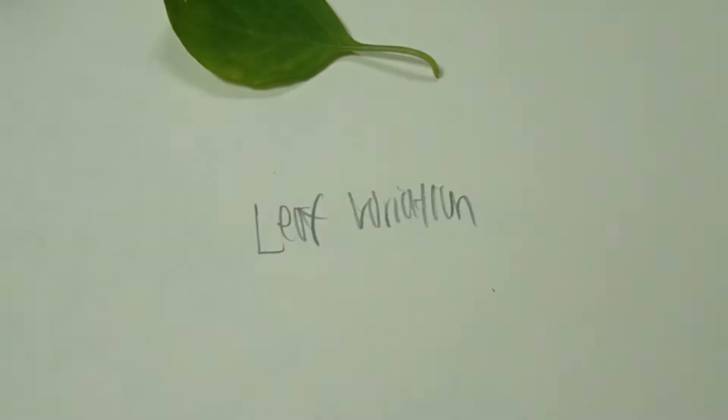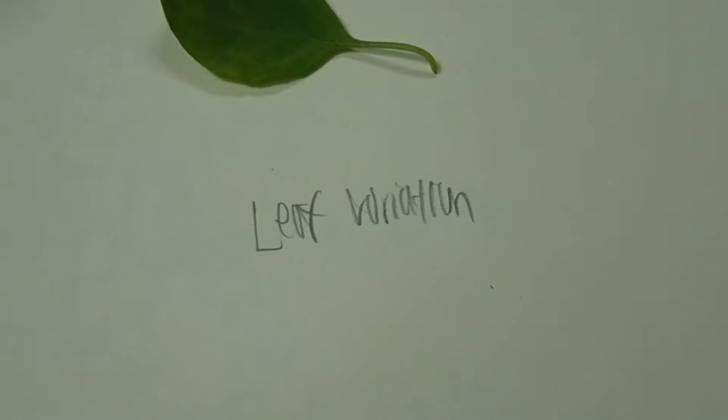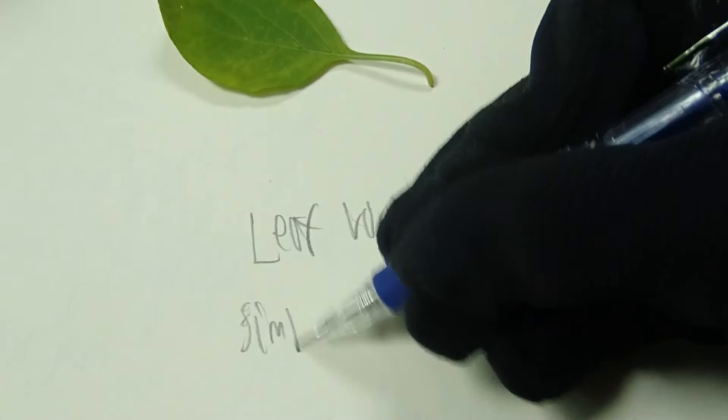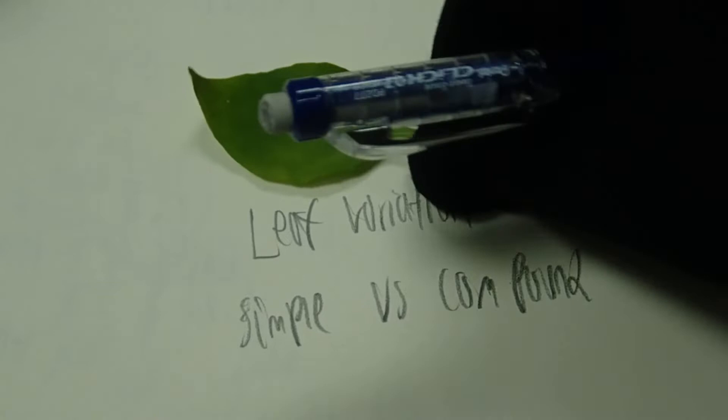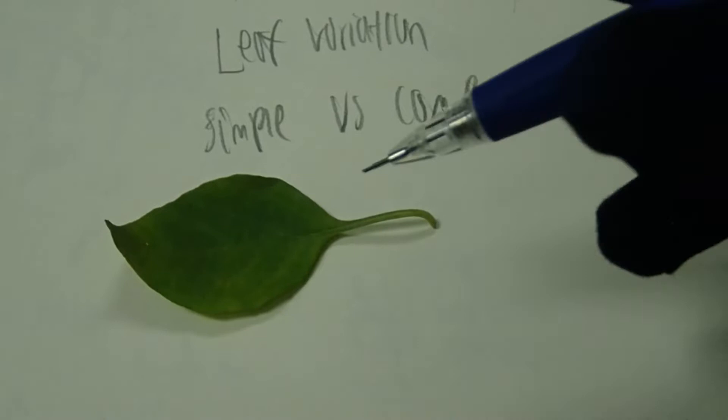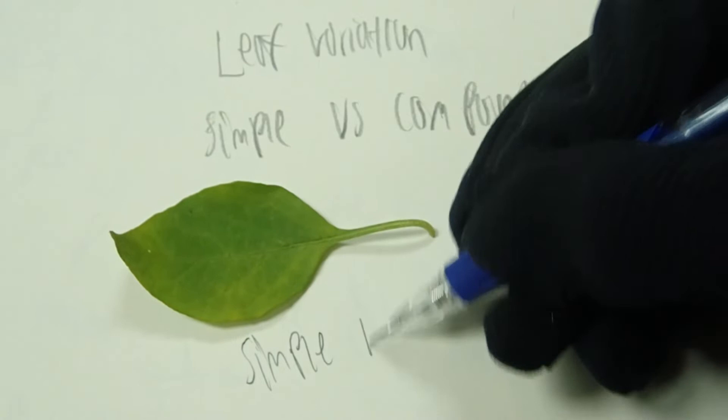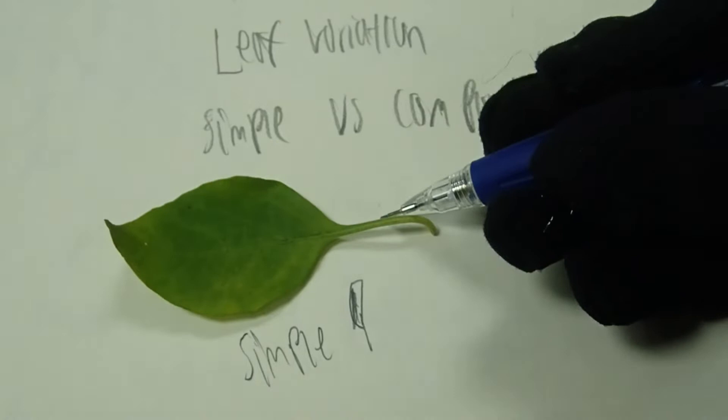The first thing to know about leaves is that they can be a simple leaf or a compound leaf. This leaf on the top here, from what I'm assuming is a chili pepper, is a simple leaf.